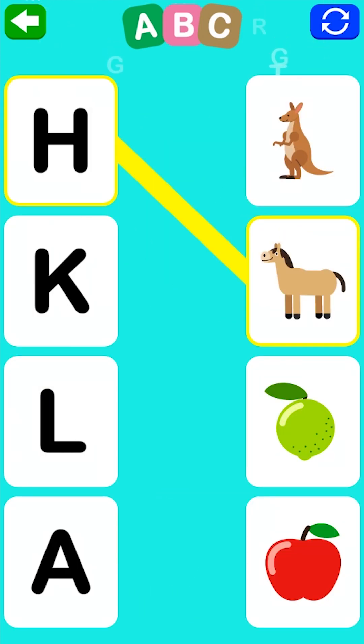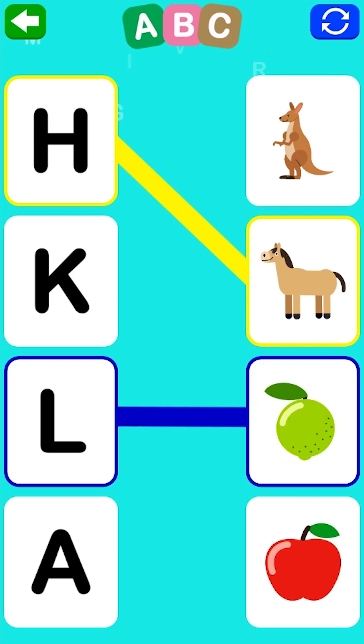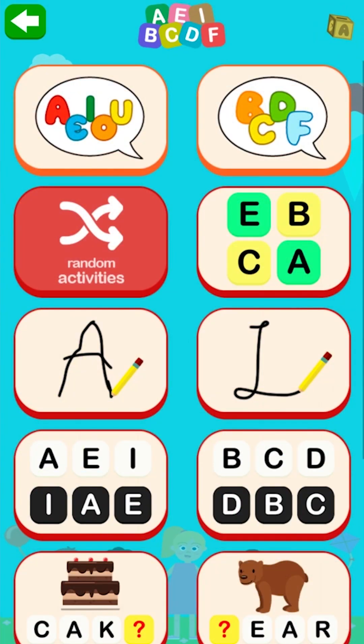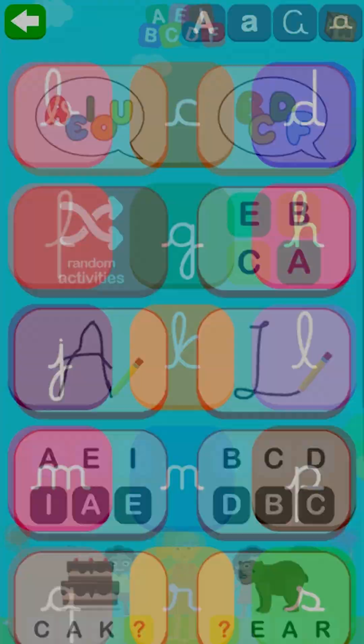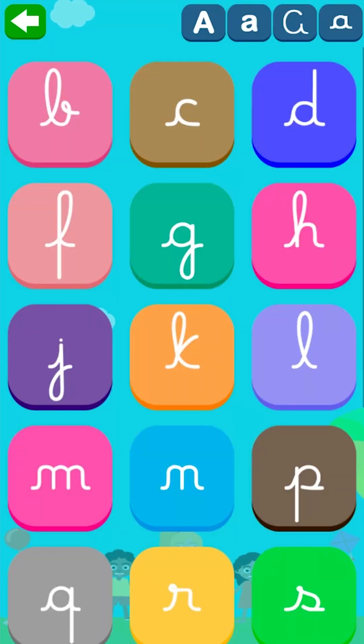K, H. H is for horse. L is for lemon. Vowels and consonants: the vowels are A, E, I, O, U. The consonants are the other letters of the alphabet.